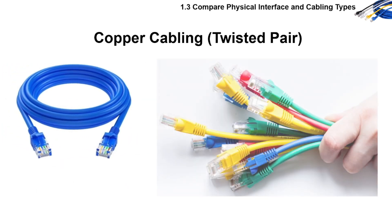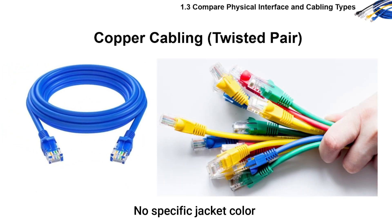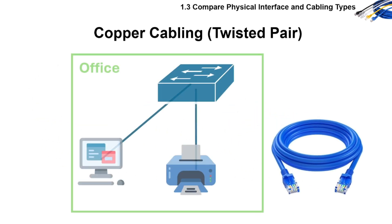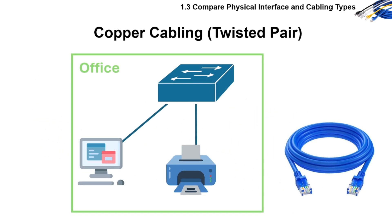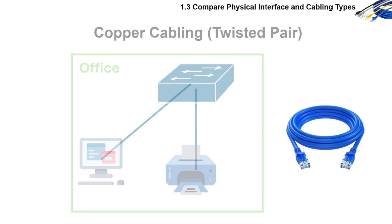For color coding, there's no specific jacket color for CCNA, but blue or gray is common. Here's an example of using copper cable: you plug your PC to a switch using Ethernet, and that's copper. Most internal office network connections still rely on copper.